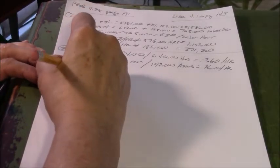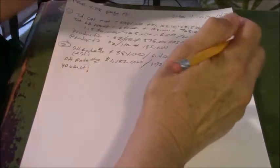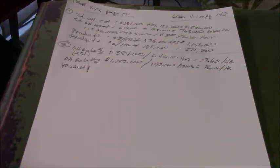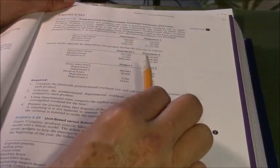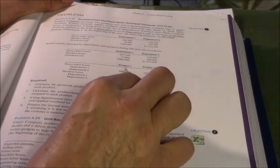So now we have to split this and send it across our two products. So product one is equal to the labor hours we spend in department one and the machine hours we spend in department two on that product.